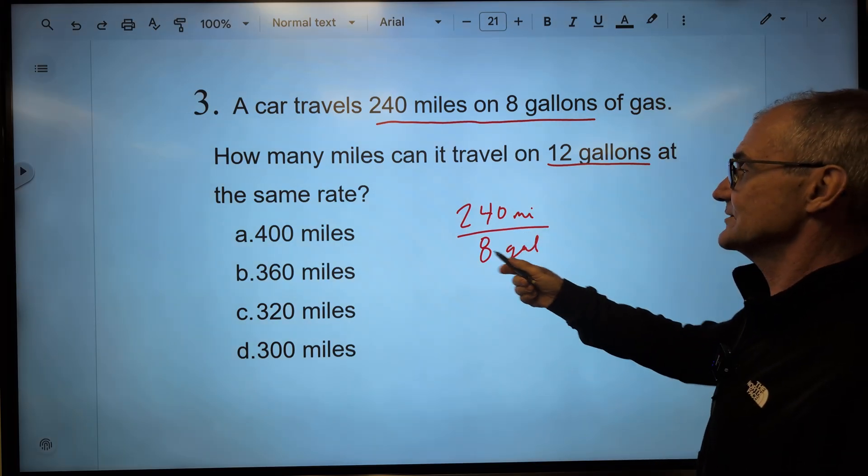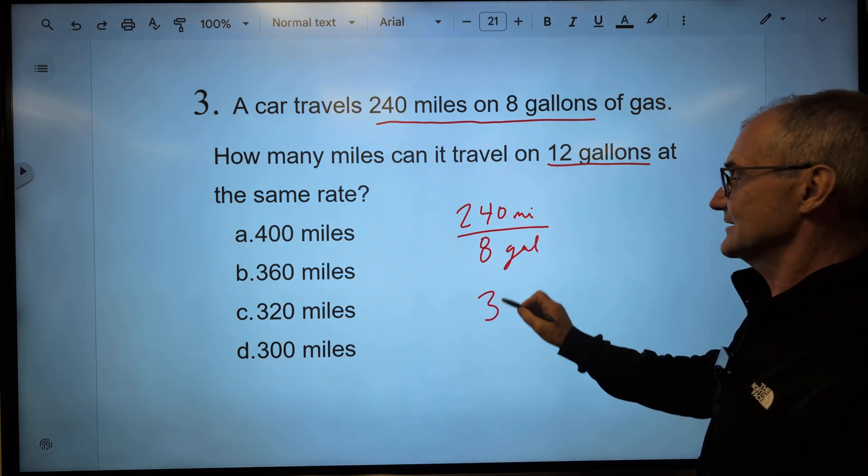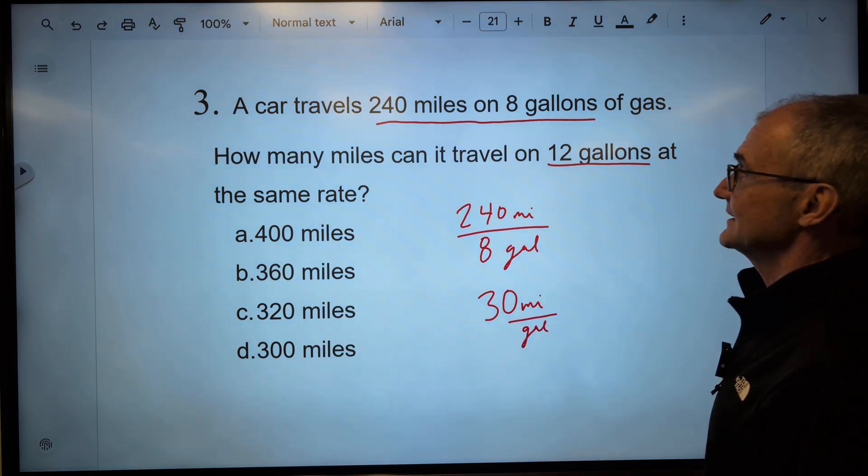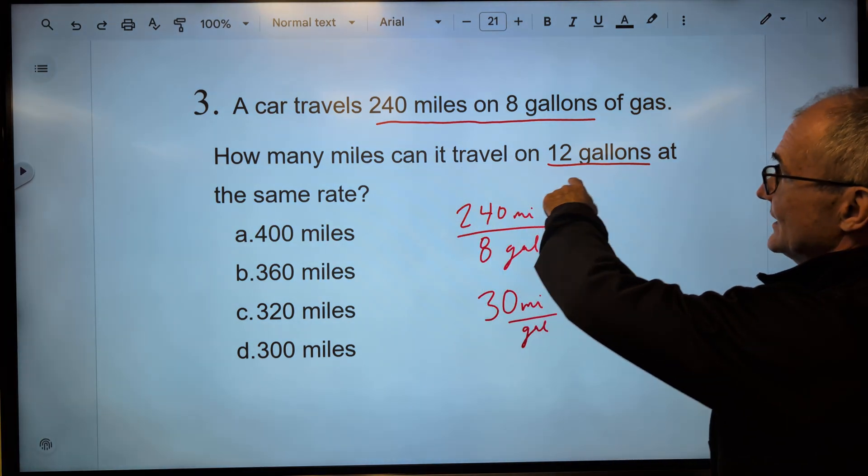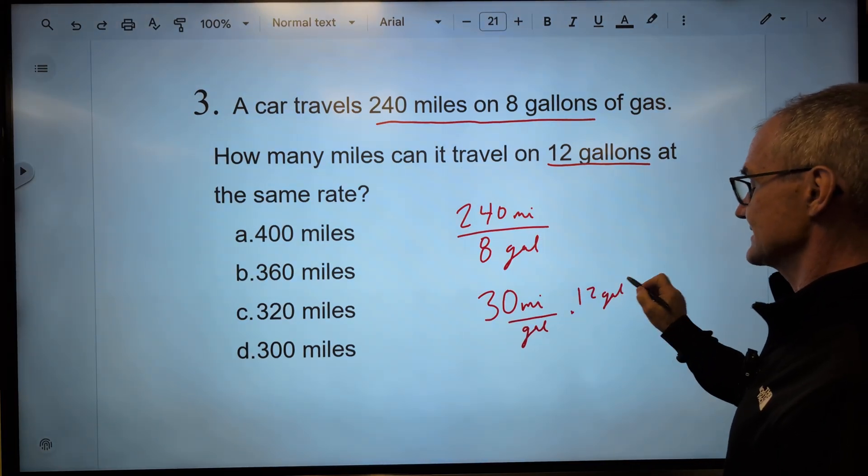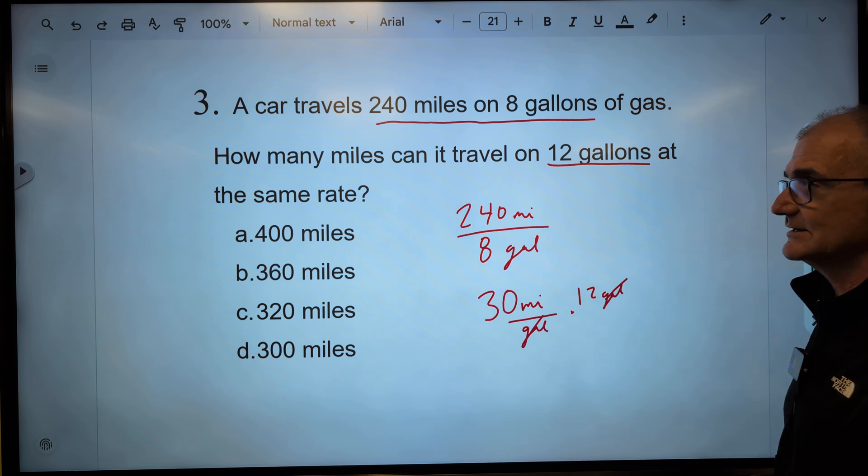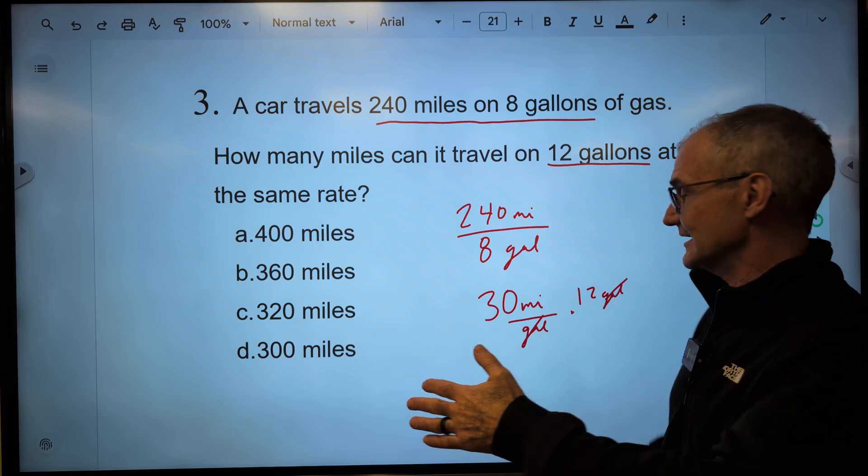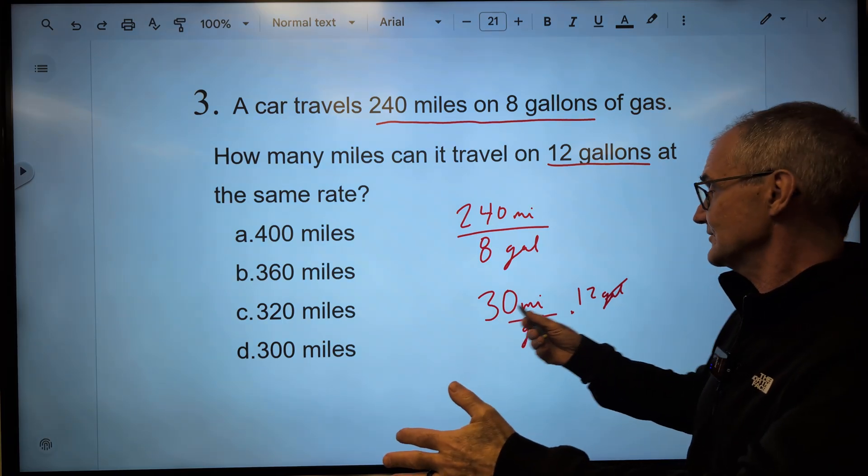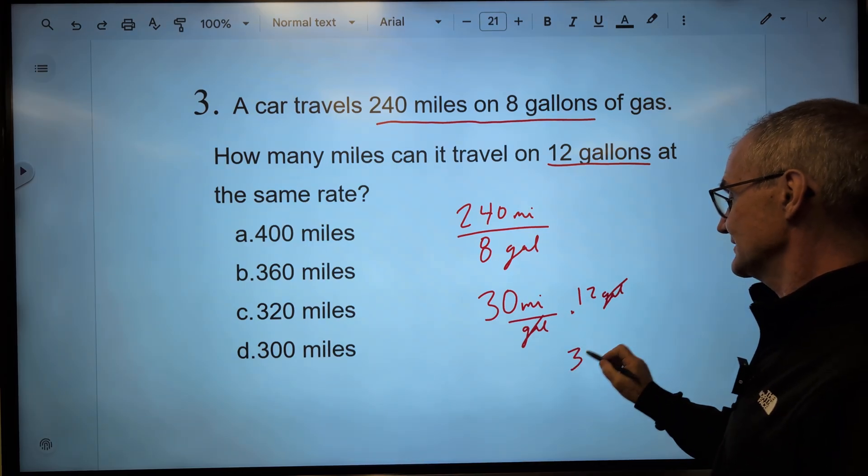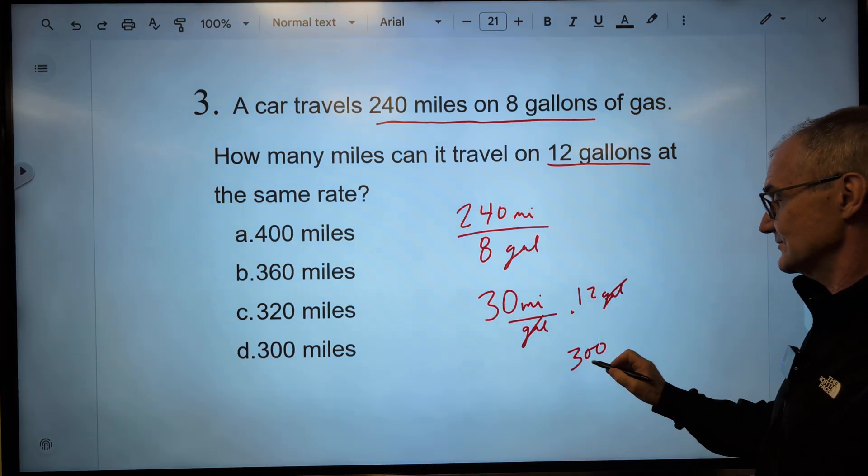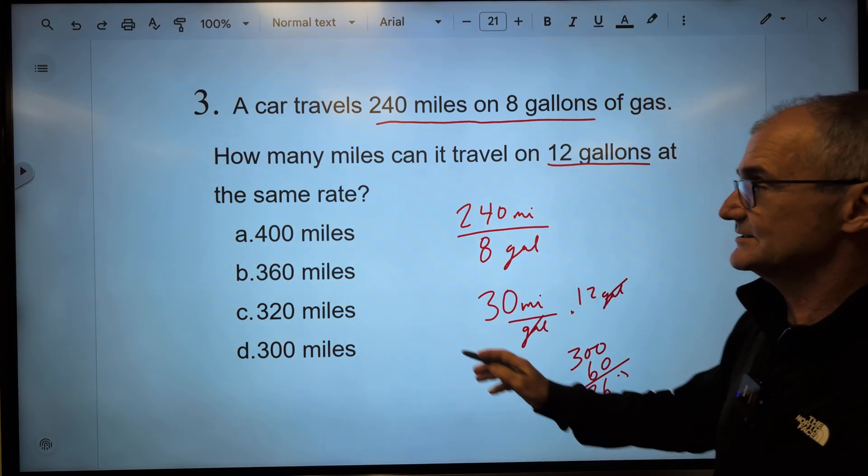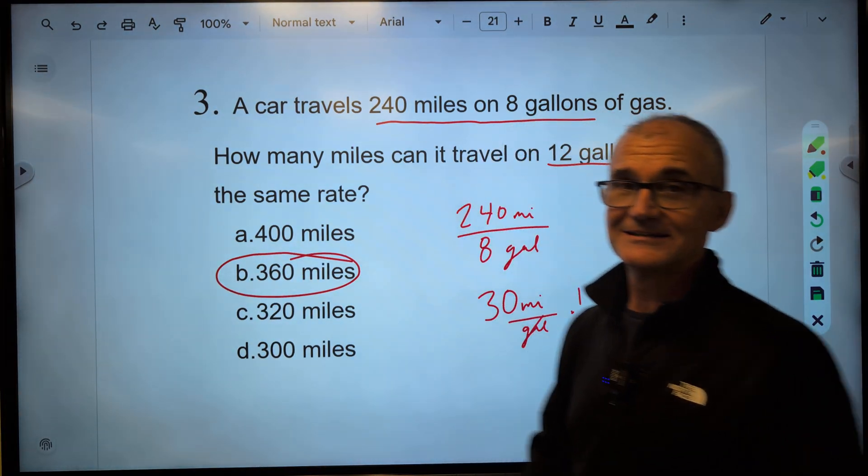So we could do this a few different ways. I could do 240 divided by 8 is 30, remembering that 0 to get 30 miles per gallon. And then I'm going to go times 12 gallons. My gallons will cancel, and I have to do 30 times 12. All these standardized math exams are no calculator, so there's always got to be a trick. I can multiply this out with long multiplication, or I could use a trick. 30 times 10 is 300. 30 times 2 is 60 for a total of 360 miles. Correct answer, answer B.